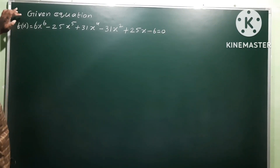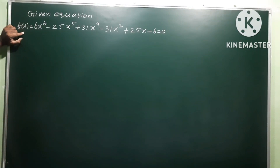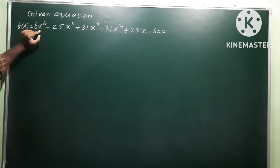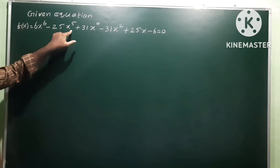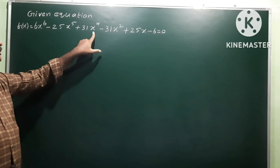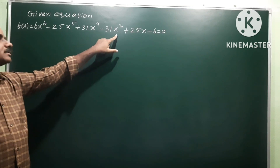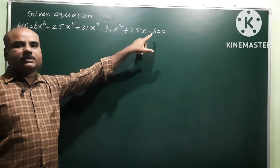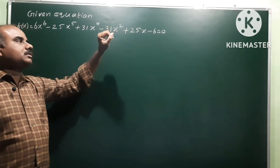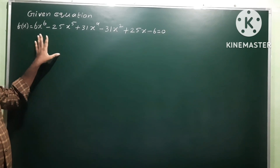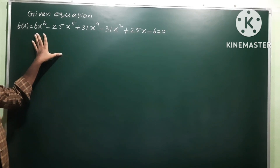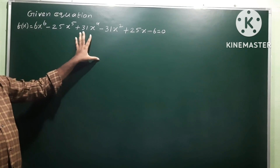Okay, next problem. Given equation: f(x) = 6x⁶ - 25x⁵ + 31x⁴ - 31x² + 25x - 6 = 0. We have to solve this equation, that means we have to find the roots of this equation.